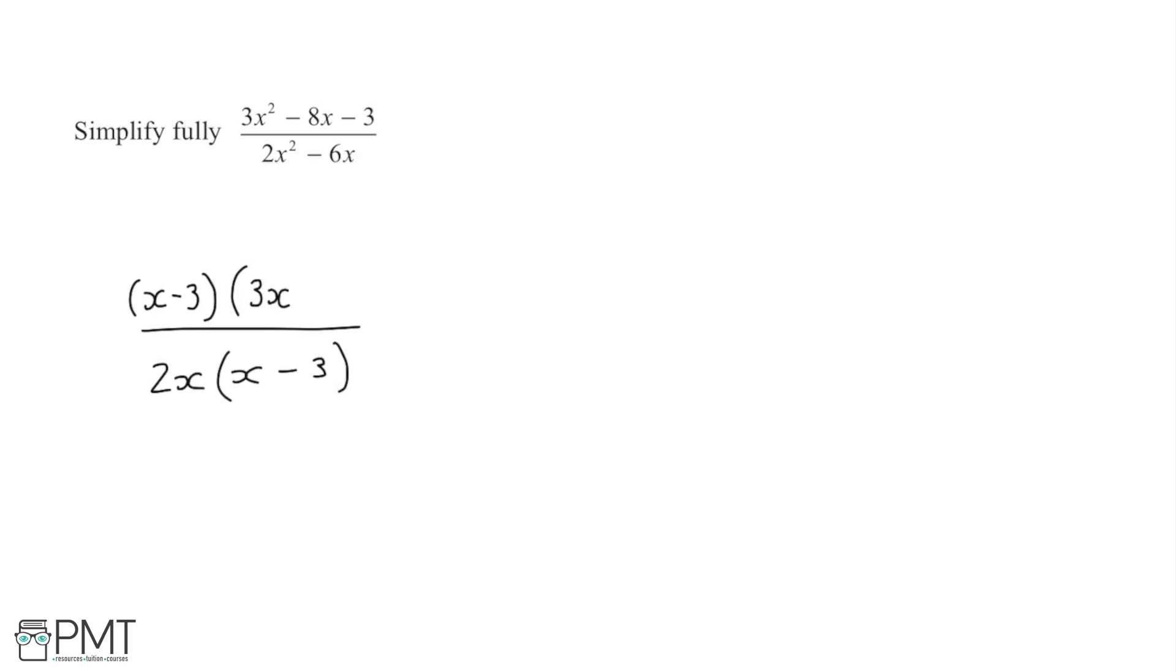That would give me 3x squared when the first term in each bracket is multiplied by one another. Then to get the minus 3 I'm looking at last terms in the brackets, so what does this minus 3 need to be multiplied by to get minus 3? That's going to be 1, so I can add 1.